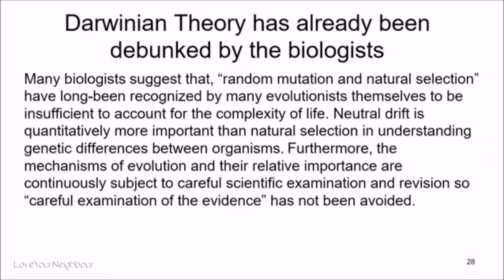Darwinian theory has already been debunked by biologists. Many biologists suggest, and I'm quoting them, that random mutation and natural selection have long been recognized by many evolutionists themselves to be insufficient to account for the complexity of life. They say neutral drift is quantitatively more important than natural selection in understanding genetic differences between organisms. Further, the mechanisms of evolution and their relative importance are continuously subject to careful examination and revision.